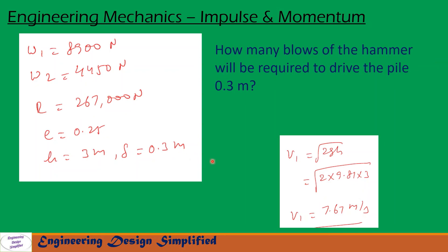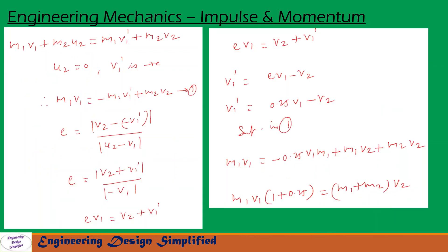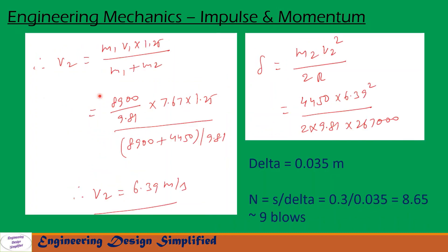First, the velocity of the hammer just before impact: v1 = √(2gh). Substituting the values gives v1 = 7.67 m/s. The velocity of the pile after impact v2 is calculated using the conservation of momentum equation and the coefficient of restitution equation. Substituting all values and solving, the equations reduce to v2 = m1·v1·(1 + e) / (m1 + m2). After substitution and simplification, v2 = 6.39 m/s.